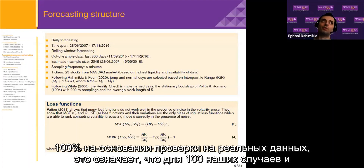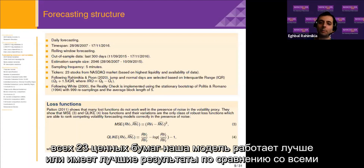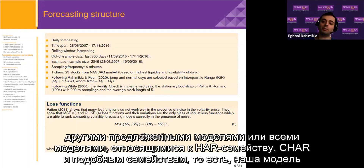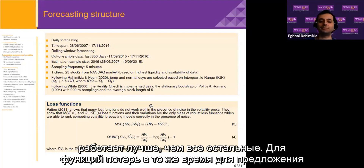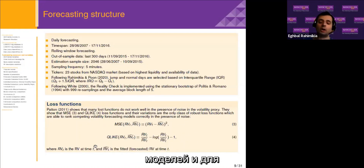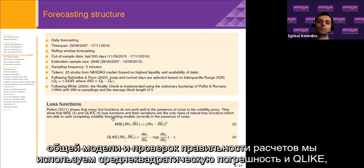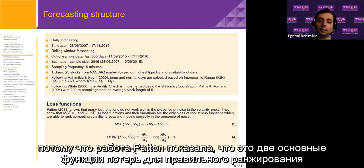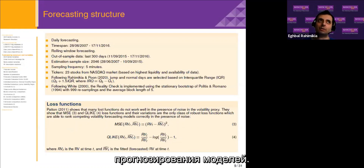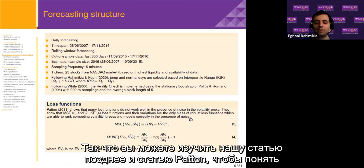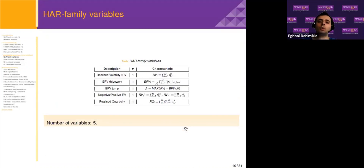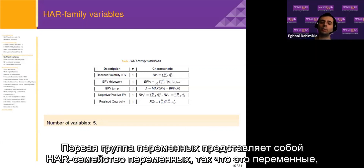We use the reality check of White with 999 re-samplings and an average block length of five for comparing every proposed model with all our family of models together. If the result is 100%, it means that for all 23 stocks our model is working better than all other proposed family models — HARC, HARJ, all of them. For loss functions we use mean square error and QLIKE, as research shows these are the main two loss functions for properly ranking realized volatility forecasting models.